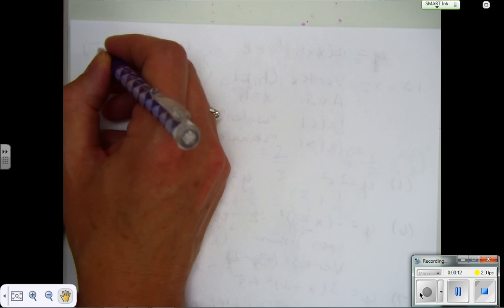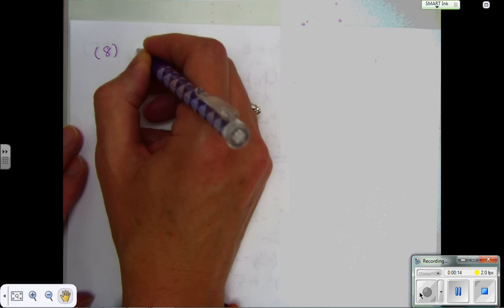All right, moving on. We are going to move on to number 8. Number 8 is to write each in vertex form. So we're going to have to manipulate these equations into vertex form.